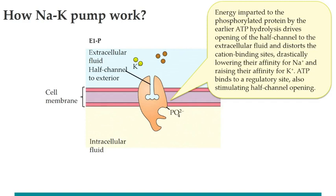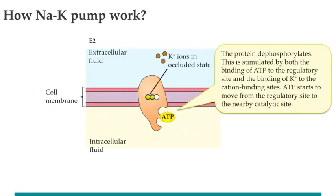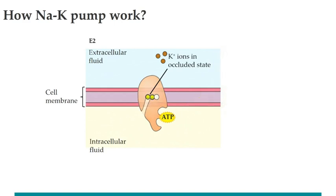Once the extracellular face opens, sodium can leave and potassium can occupy those same sites. This causes a second ATP to bind, which drives another conformational change, allowing the potassium to unbind and leave the protein on the intracellular side.